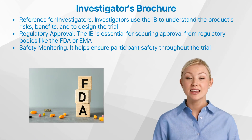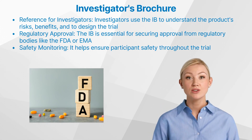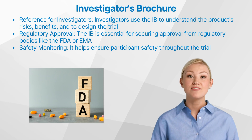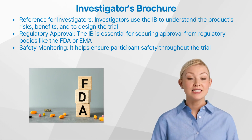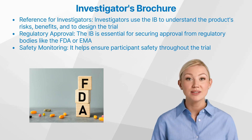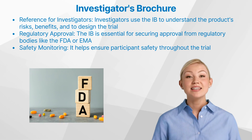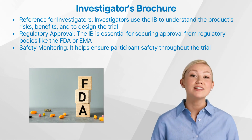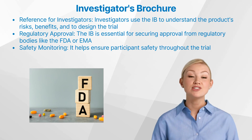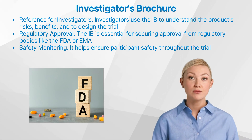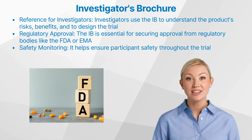How is the investigator's brochure used in a clinical trial? The IB serves as a critical reference tool for investigators during a clinical trial. They use it to understand the investigational product in depth, including its potential risks and benefits. This knowledge helps them design the trial effectively, monitor participants' safety, and interpret study results accurately. Moreover, the investigator's brochure plays a pivotal role in securing regulatory approval, as bodies like the FDA or European Medicines Agency review the IB to assess whether a proposed trial is scientifically sound and ethically justified.